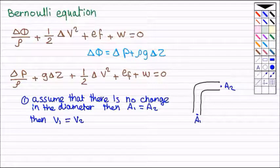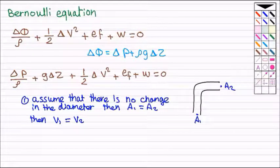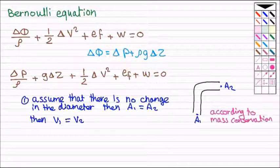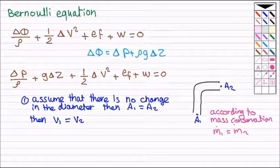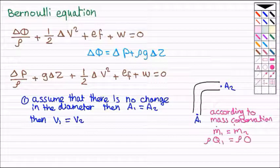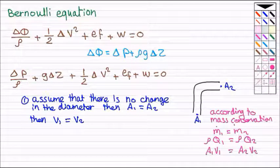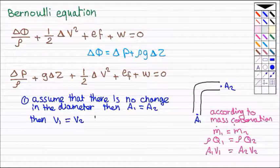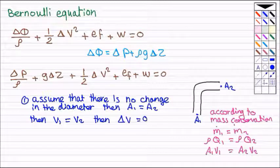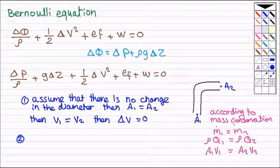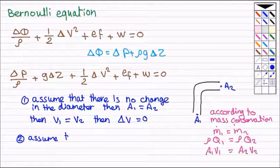And accordingly, v1 equal to v2, according to the mass balance. Mass flow rate 1 equal to mass flow rate 2. Now we can say delta v equal to zero and the kinetic energy delta v squared can be cancelled out.